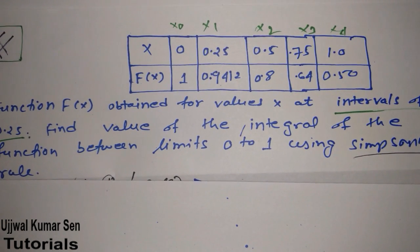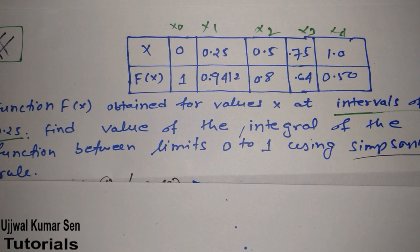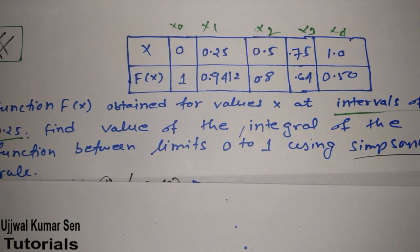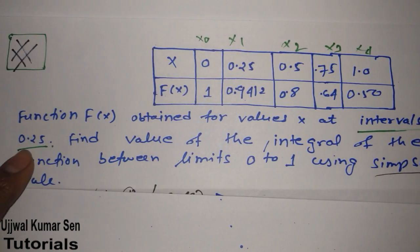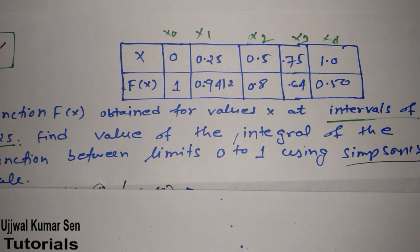I have already shared with you one of the methods which is also important for GATE examination: the trapezoidal method. One tip I would like to share with you: if we solve the same question by using trapezoidal method and Simpson's rule, the most accurate answer will be obtained by using Simpson's rule. If you are using this method to solve any real-life problem, then I would recommend using Simpson's rule over trapezoidal rule. Now we'll solve this question. They have given data at intervals of 0.25.